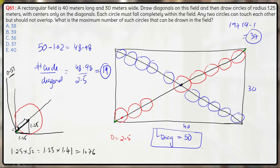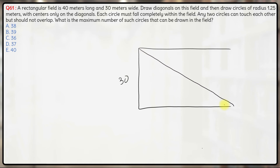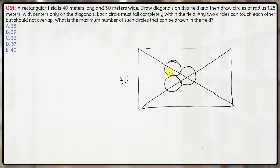A potential confusion arises: will the two circles adjacent to the central circle — one on each diagonal — overlap each other? If the distance between their centers is more than 2.5 meters (i.e., more than 1.25 + 1.25), the circles will not overlap. Let us verify this. This involves checking the distance between centers of adjacent off-diagonal circles near the intersection point.